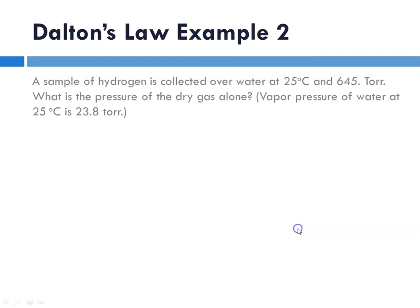Dalton's Law Example 2. A sample of hydrogen is collected over water at 25 degrees C and 645 torr. So this 645 torr is whatever the pressure in the room is on that day. What is the pressure of the dry gas alone?